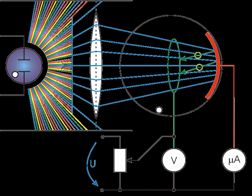Photoemission can occur from any material, but it is most easily observable from metals or other conductors because the process produces a charge imbalance, and if this charge imbalance is not neutralized by current flow, the potential barrier to emission increases until the emission current ceases. It is also usual to have the emitting surface in a vacuum, since gases impede the flow of photoelectrons and make them difficult to observe. Additionally, the energy barrier to photoemission is usually increased by thin oxide layers on metal surfaces if the metal has been exposed to oxygen, so most practical experiments and devices based on the photoelectric effect use clean metal surfaces in a vacuum. When the photoelectron is emitted into a solid rather than into a vacuum, the term internal photoemission is often used, and emission into a vacuum is distinguished as external photoemission.